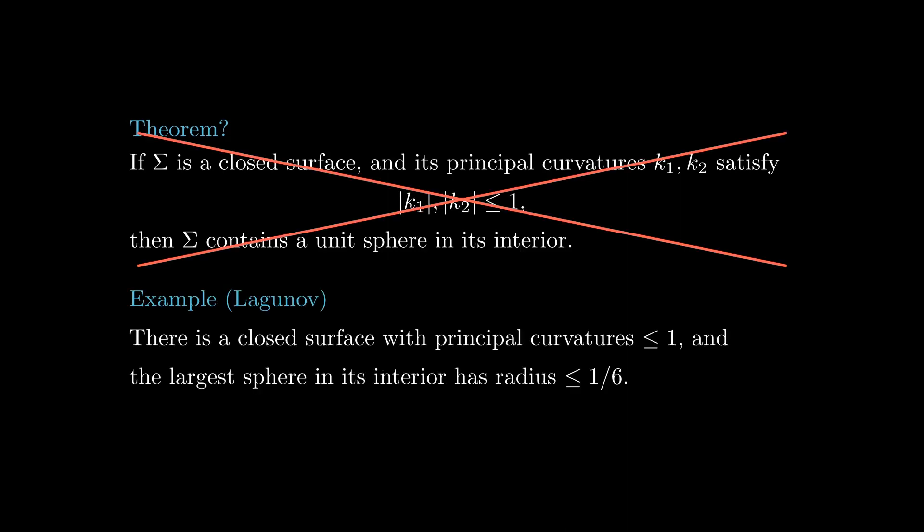However, this is wrong. Vladimir Lagunov constructed a closed surface with principal curvatures bounded in absolute value by 1, and the largest sphere containing its interior has radius less than 1/6. Now we will see how this construction goes.